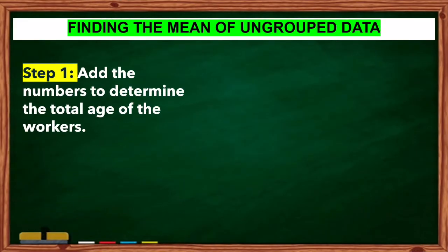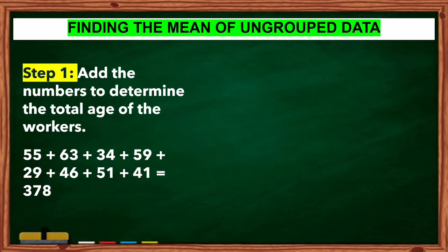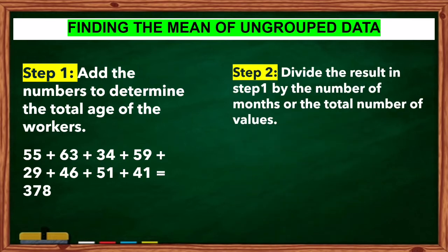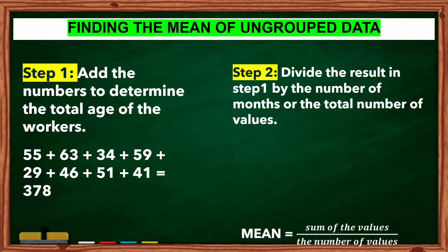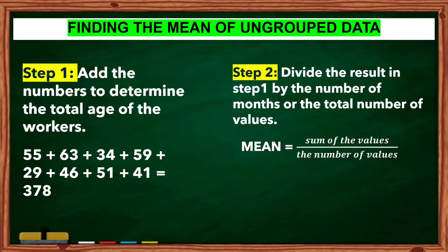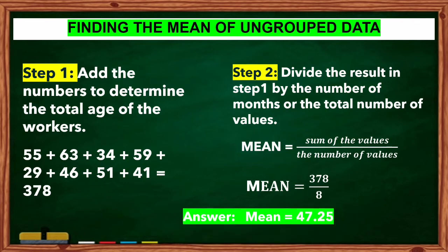Step 1: Add the numbers to determine the total age of the workers. So, 55 plus 63 plus 34 plus 59 plus 29 plus 46 plus 51 plus 41 is equal to 378. Step 2: Divide the result in Step 1 by the number of ages or the total number of values. So, mean is equal to the sum of the values divided by the number of values. We have 378 divided by 8. The answer is 47.25.